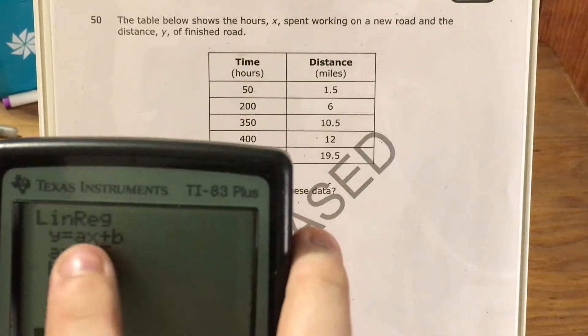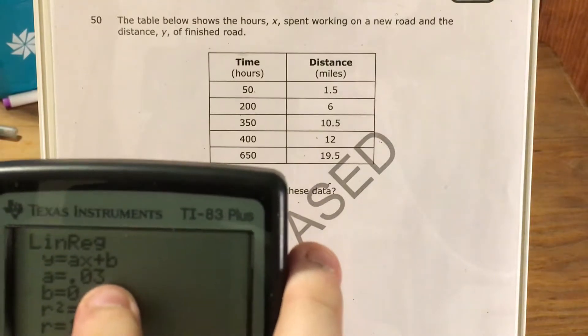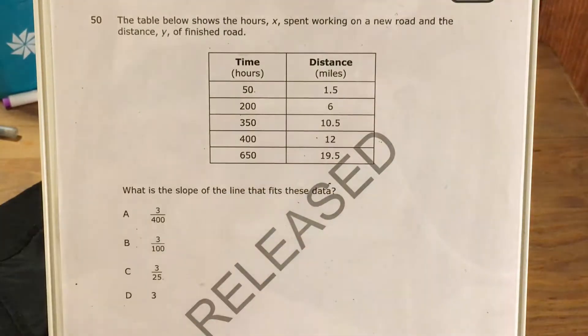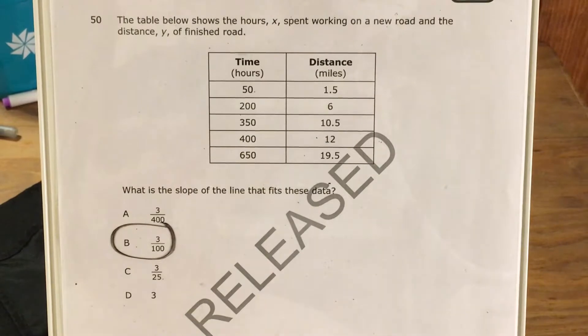But anyway, this is my slope, AX plus B. My X coefficient is going to be my slope, and this time it's 0.03, also known as 3 hundredths. And if you remember having to say decimals like that earlier in school, this is the kind of question it can serve you very well on, because my answer here is 3 hundredths.